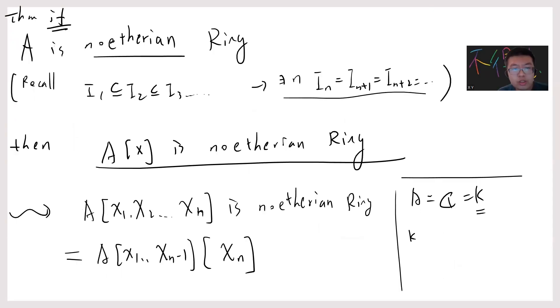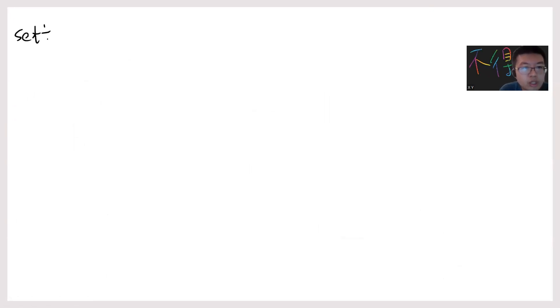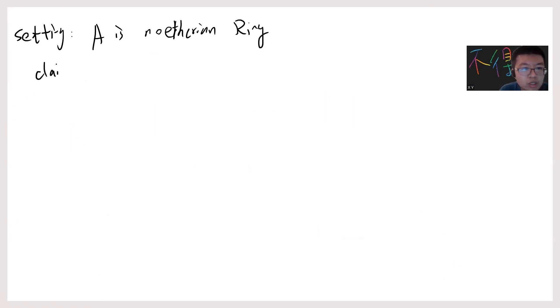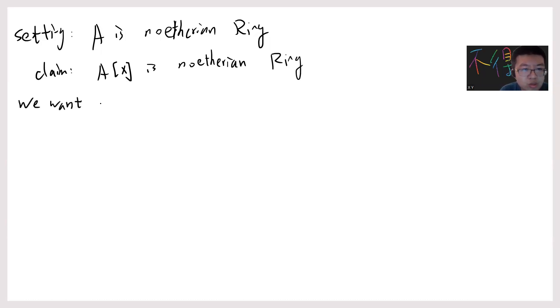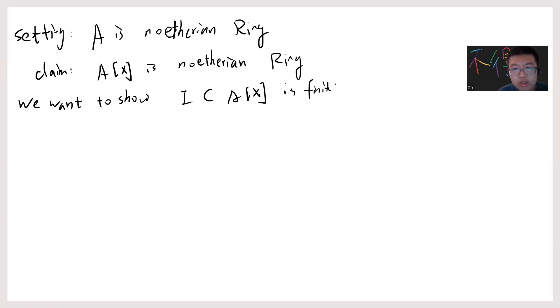So now we can go back to prove the Hilbert Basis Theorem. The setting is A is a Noetherian ring, and we want to claim that A[x] is also Noetherian. We don't want to use the ascending chain directly, so we want to show that every ideal I in A[x] is finitely generated.